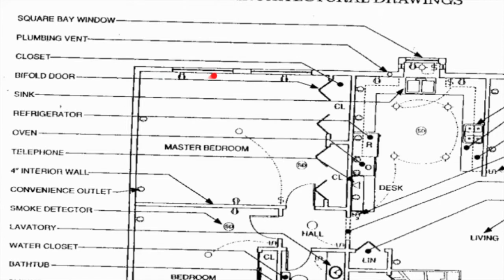Windows — this would represent a window; it marks off the length of the window with a line down the middle, could be two, and that represents a window. So a square bay window — the wall sticks out, comes across and down, this is the window symbol — that would be a square bay window.